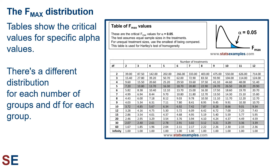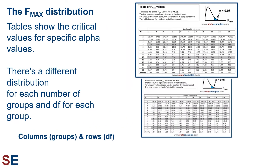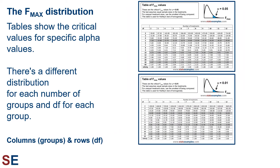Tables of critical values for the F-max test are usually presented with a separate table for each critical value, because there's a different distribution for each number of groups and degrees of freedom value for each group. Here are two F-max critical value tables from the Stats Examples website for alpha values of 0.05 and 0.01. These tables are arranged with columns corresponding to the number of groups or treatments being compared and rows corresponding to the degrees of freedom in each group or treatment.